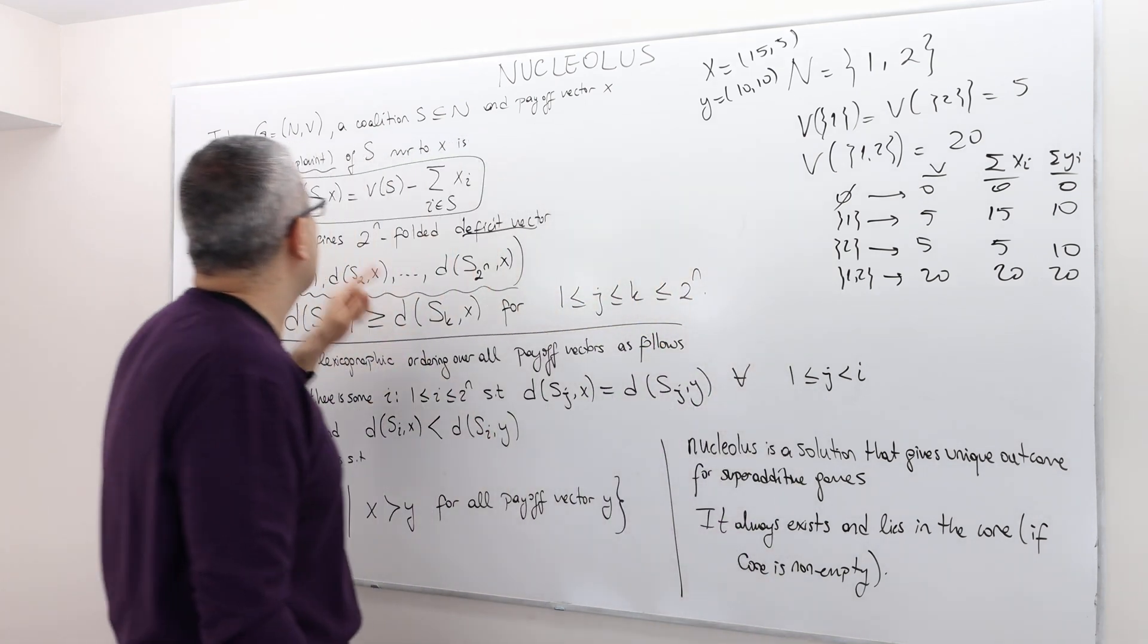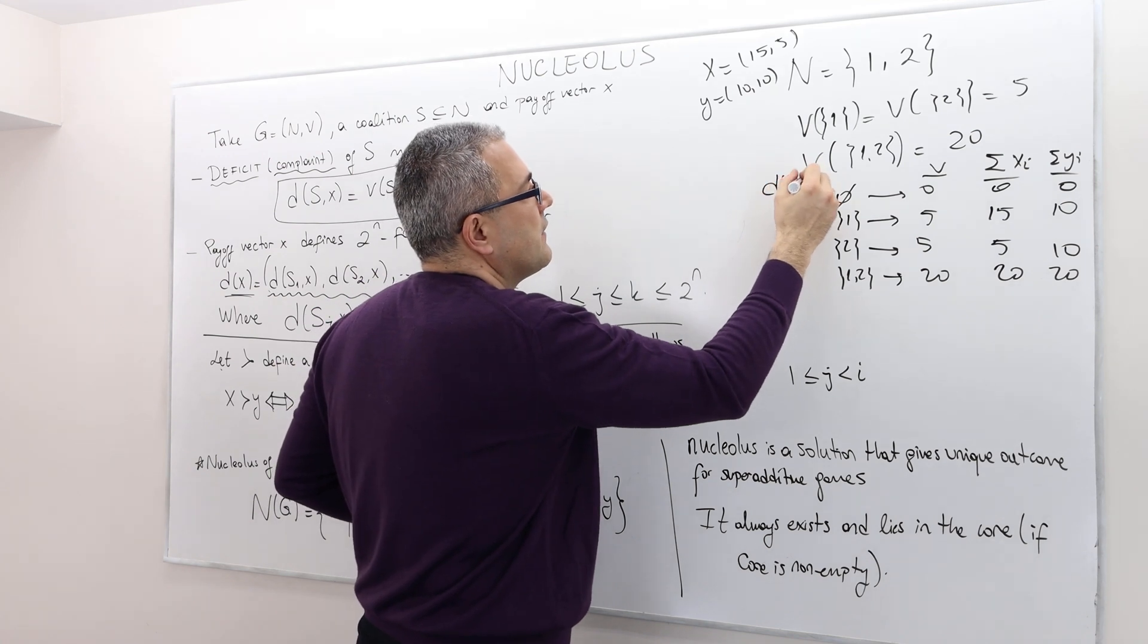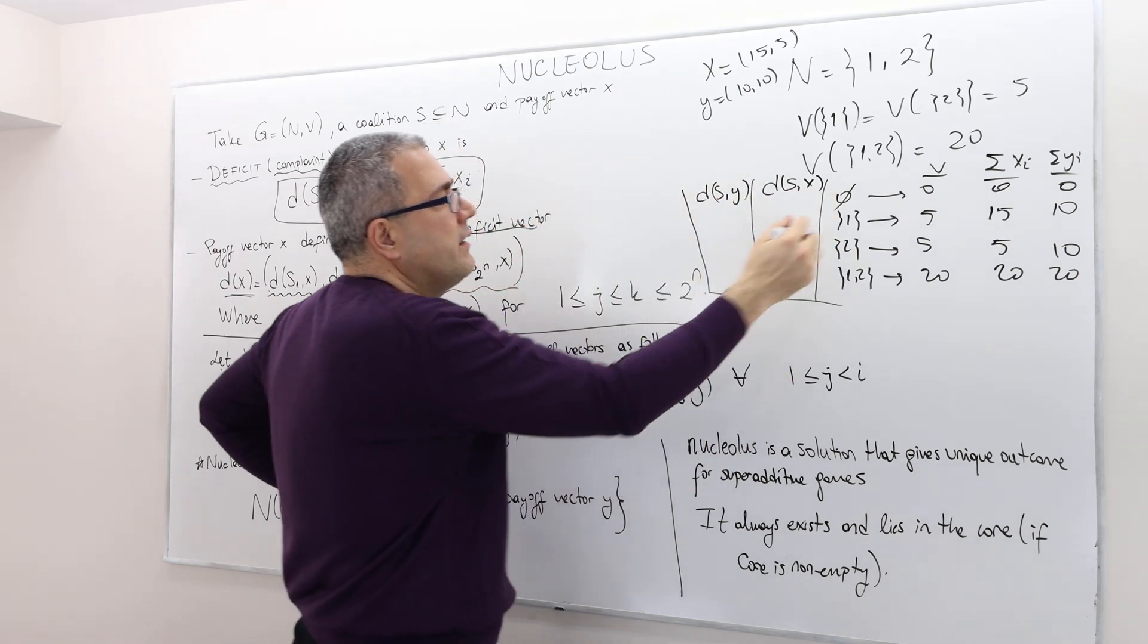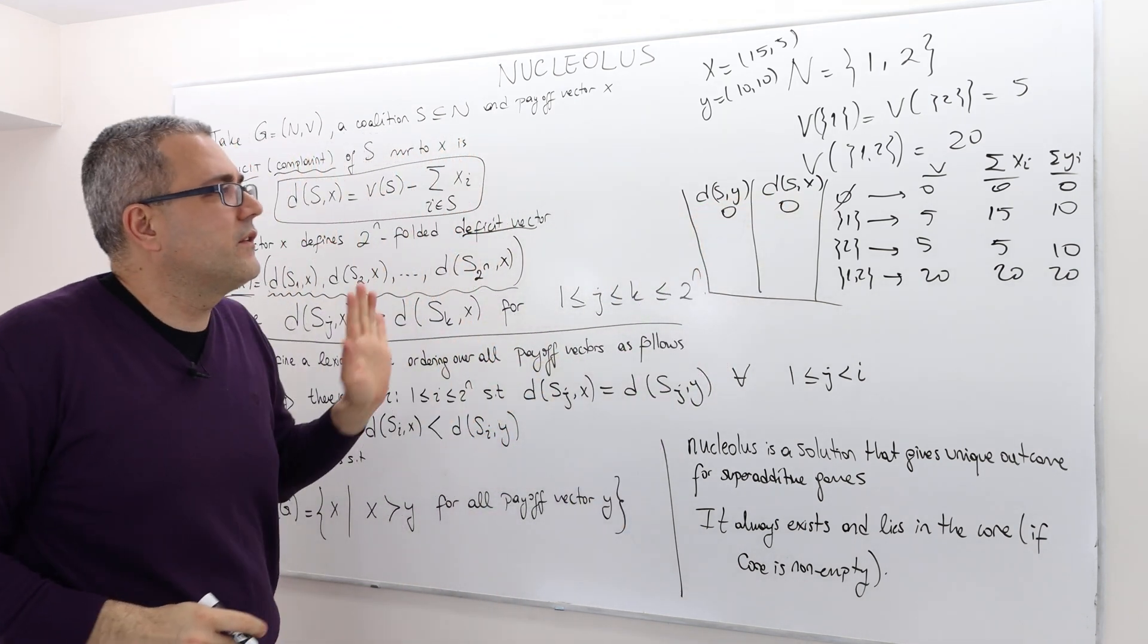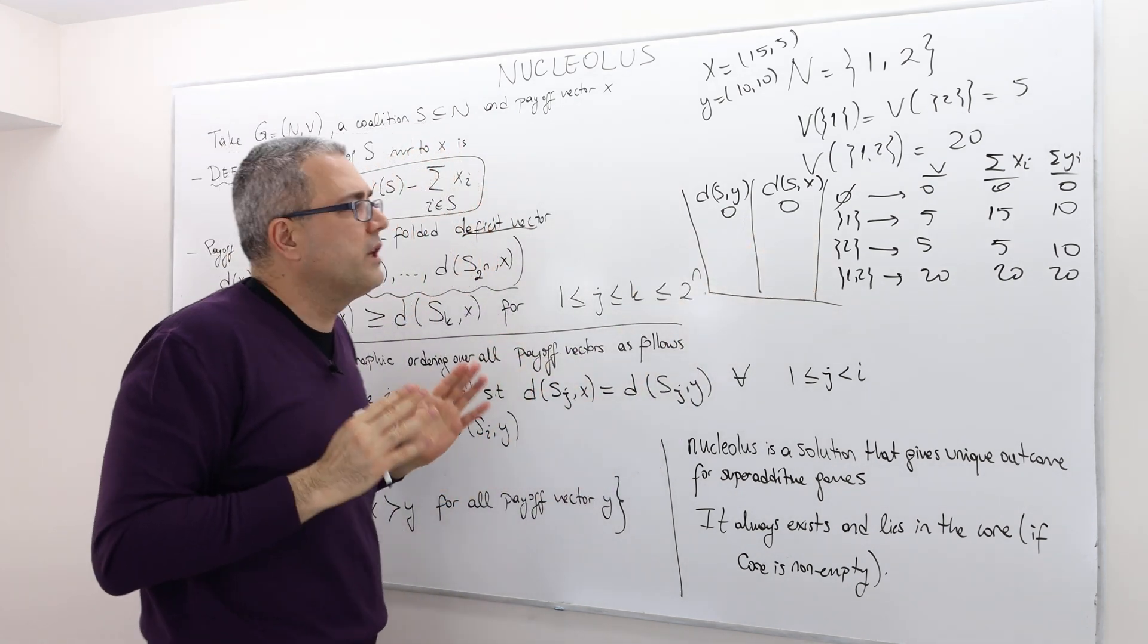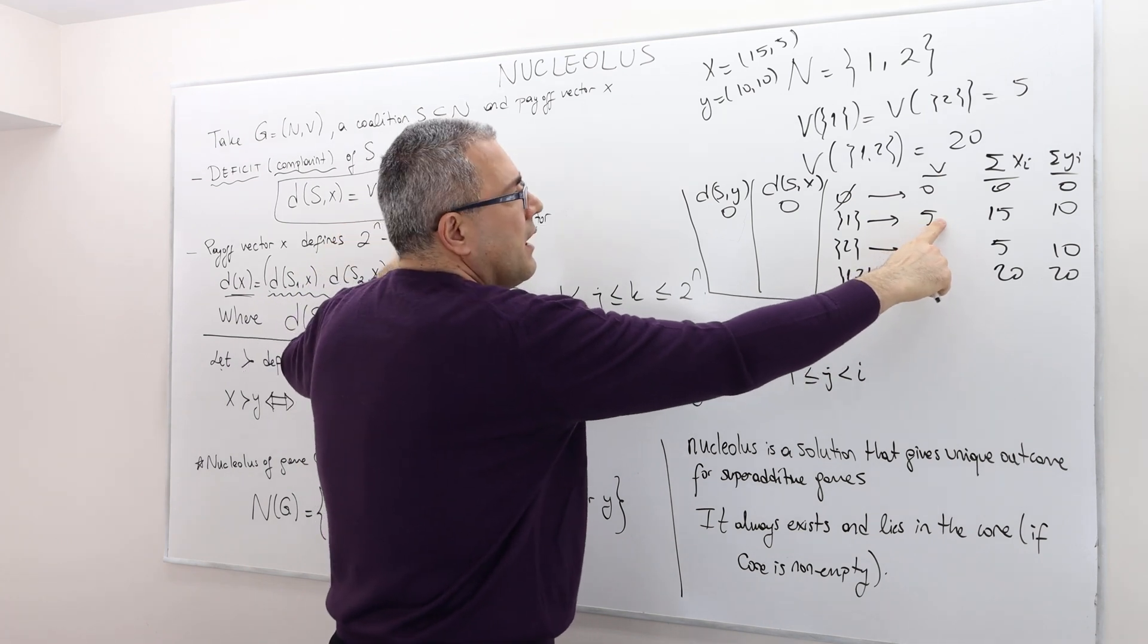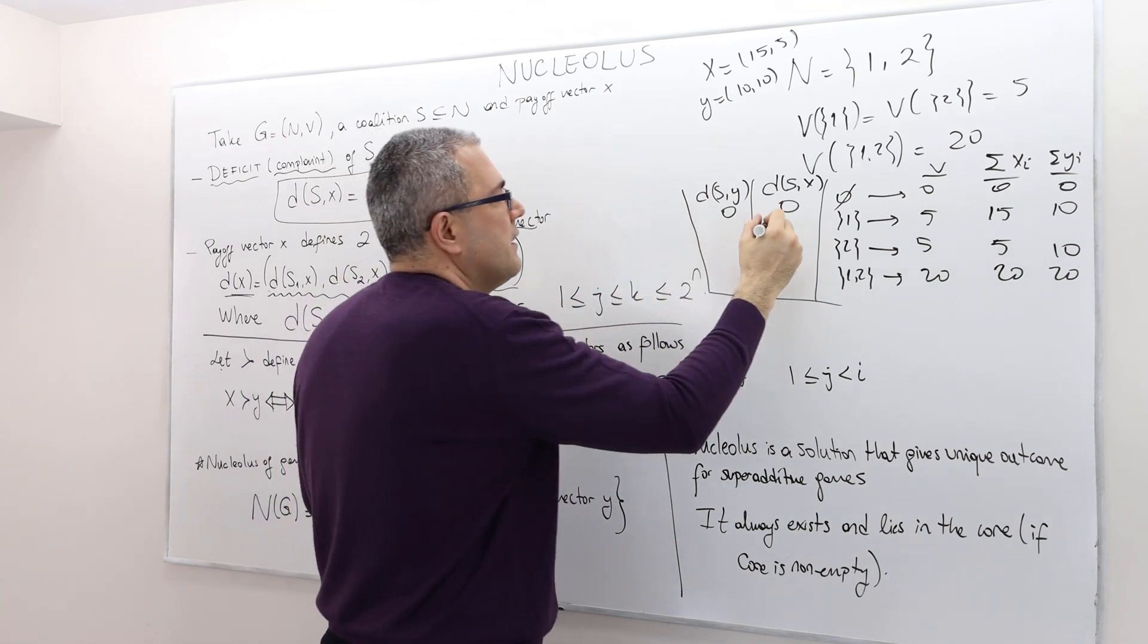So now I like to calculate this dsx and dsy. When the coalition is 0, the dsx or y is 0. So when the coalition is 1, player 1 alone, dsx is what? vs, which is 5, minus the sum. Under xi, it's 15. So it's 5 minus 15, so minus 10.